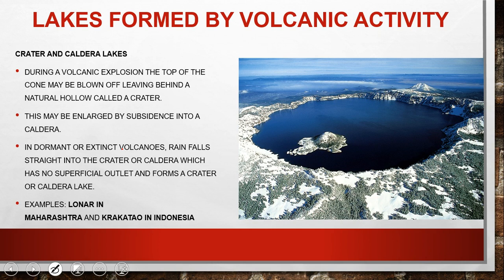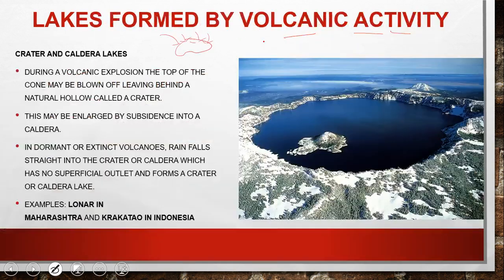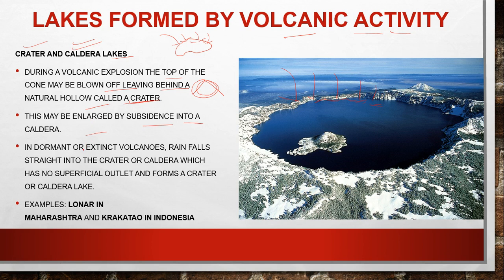Volcanic activity can also form lakes — whatever structure is formed by volcanic activity, if water collects there, it becomes a lake. Crater and caldera lakes are formed during a volcanic eruption when the top of the cone may be blown off, leaving behind a natural hollow called a crater or caldera. When rainfall occurs, water fills these craters or calderas. They may be enlarged by subsidence. Dormant or extinct volcanoes collect rainfall in the crater with no superficial outlet, forming crater or caldera lakes.